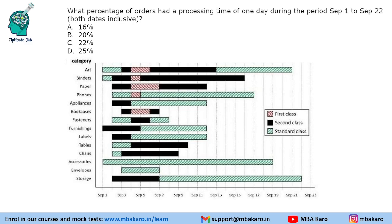Next question: What percentage of orders had a processing time of 1 day during September 1 to September 22, both dates included? Counting the orders with processing time of 1 day, we find 7 such items. The total number of orders across all categories is 35. Therefore, 7 out of 35 is one-fifth, or 20 percent. So 20% of orders had a processing time of 1 day during this period.